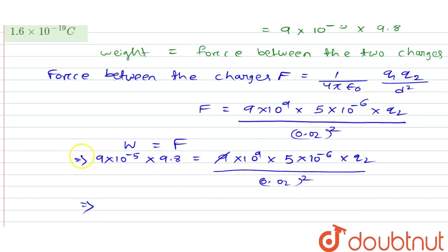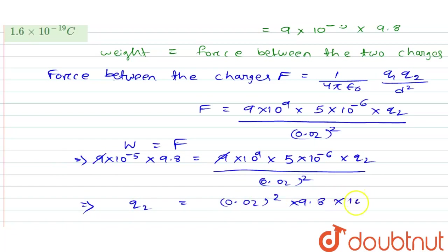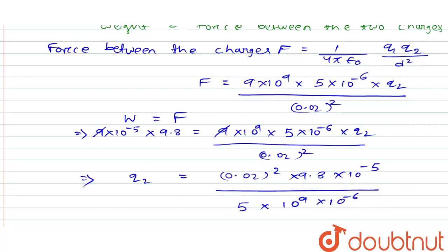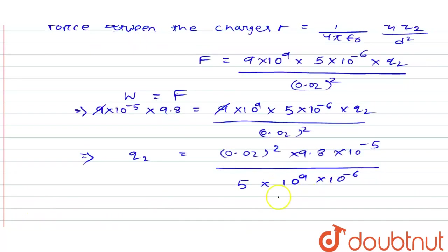Here, 9 and 9 cancel out, so q2 equals (0.02)² × 9.8 × 10⁻⁵ divided by 5×10⁹×10⁻⁶. Solving all of this, we get the value of q2.